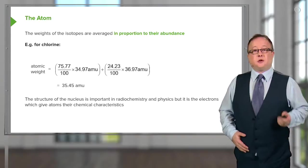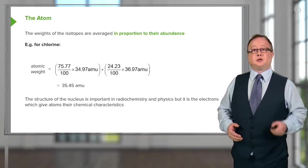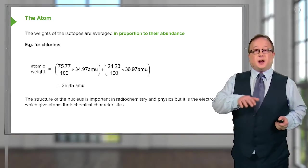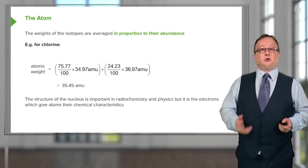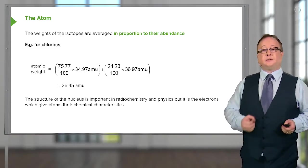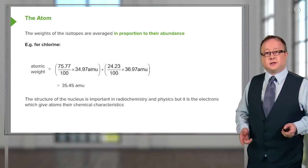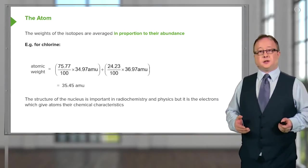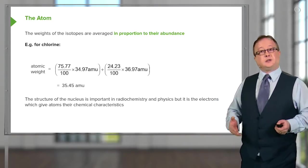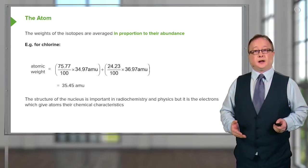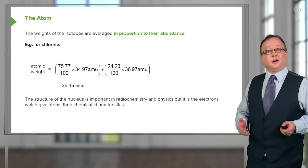And whilst the structure of the nucleus is important in radiochemistry and physics, in terms of the chemical characteristics, an atom of chlorine 35 will behave the same chemically as an atom of chlorine 37. It makes no difference to their reactivity. The only way you can even detect this sometimes is via certain analytical chemistry techniques, which are beyond the scope of this course.